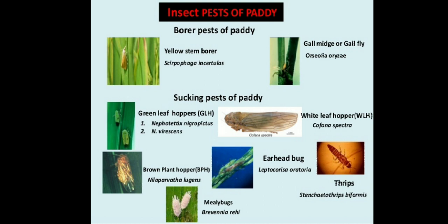The insect pests of paddy include the following. Borer pests: yellow stem borer and gall midge or gall fly. Sucking pests: green leaf hopper, Nilaparvata lugens, Nephotettix virescens, white leaf fly, brown plant hopper, ear head bug, and thrips.